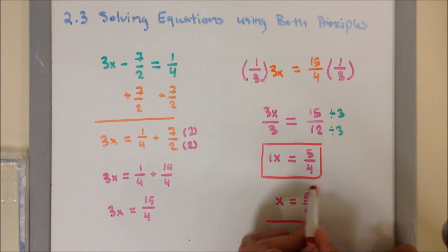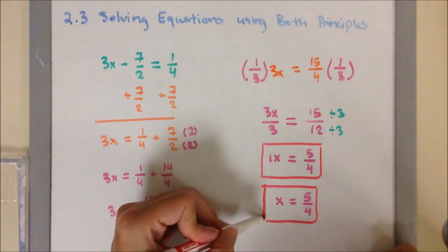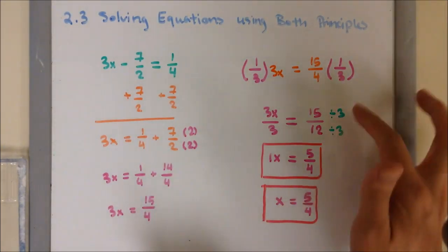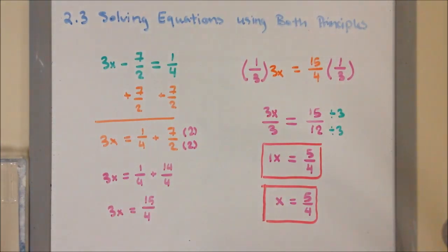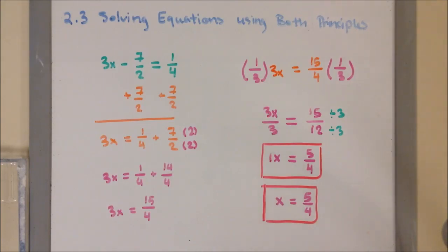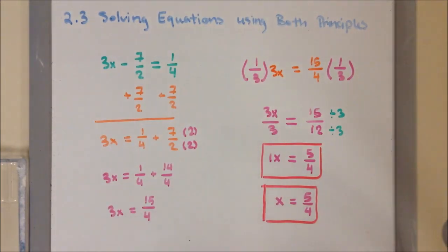When working with a fraction, you must double check if you can simplify. If you can, then do so. If you cannot, then you can leave it as an improper fraction, just like our final answer — these two are examples of an improper fraction.